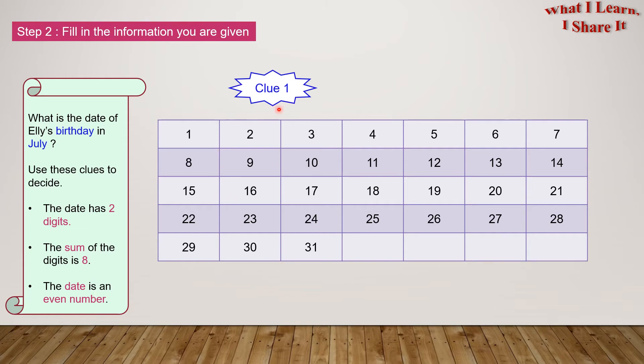Clue 1: The date has two digits. Nope! 1 doesn't have it. So we are going to cross out each of the 1-digit numbers. And numbers 1 through 9 are crossed out. So numbers 10 to 31 are remaining.